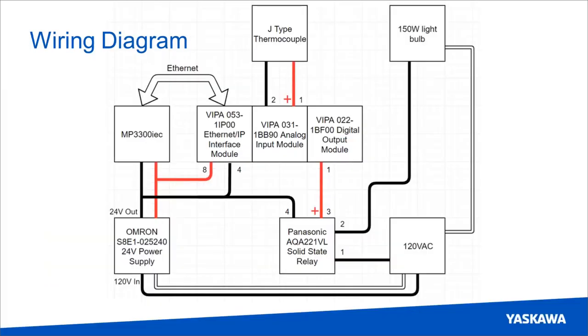And here's the wiring diagram for the oven demo. And the important pin numbers are specified for each module. And it can be seen from the wiring diagram that the digital output is used to open and close the relay to turn the light bulb on and off. So it's pulsed.